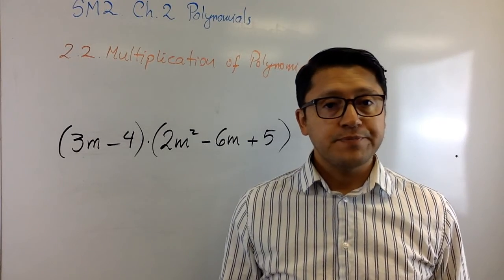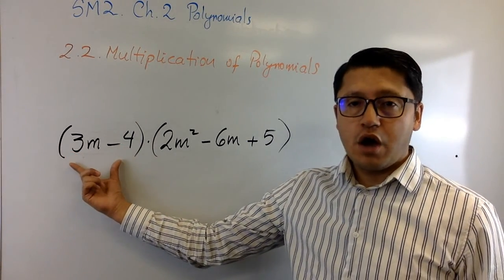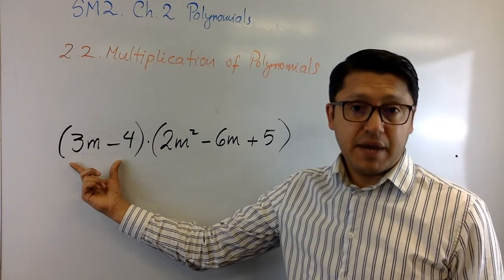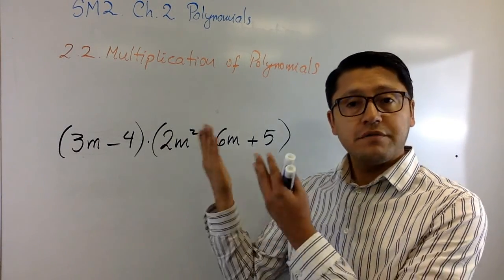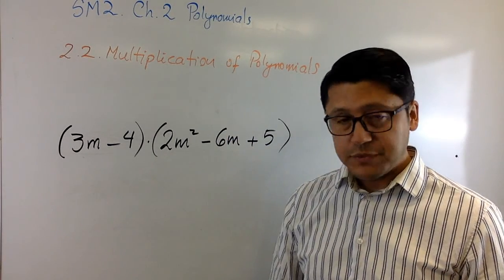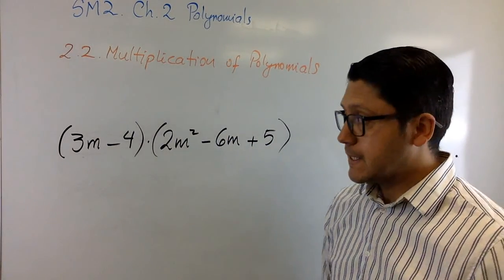What does that mean? Each of the terms of this first, in this case binomial, is going to be multiplied by each of the terms of the other polynomial, in this case a trinomial. How does that work? Let's see.